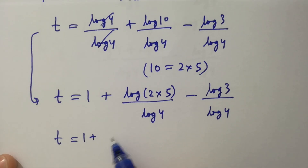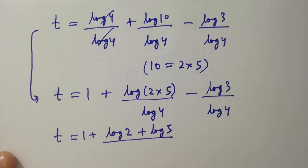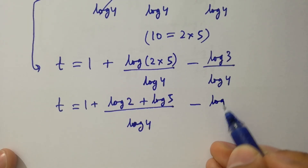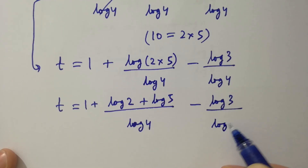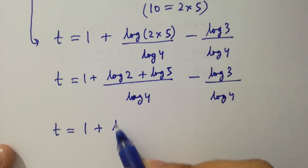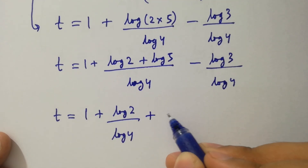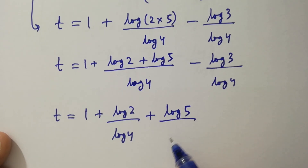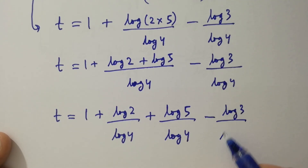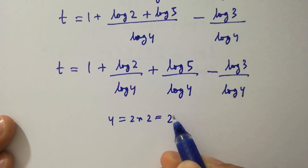So t equals 1 plus log 2 plus log 5 over log 4 minus log 3 over log 4, which equals 1 plus log 2 over log 4 plus log 5 over log 4 minus log 3 over log 4. Since 4 equals 2 times 2, which is 2 squared.